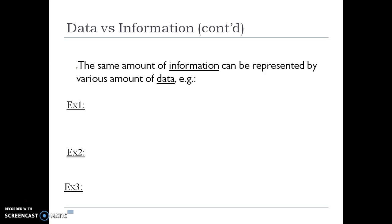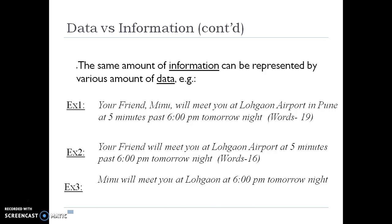Data versus information: Example 1 states "Your friend Minu will meet you at Lohegaon Airport in Pune at 5 minutes past 6 pm tomorrow night" (19 words). Example 2 shortens this to 16 words. Example 3: "Minu will meet you at Lohegaon at 6 pm tomorrow night." Comparing these examples, Example 3 requires the least number of words to represent the same information.